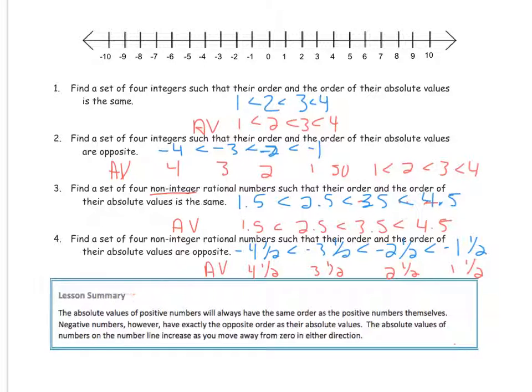All right, lesson summary. We know that the absolute value of positives will always have the same order as the positive numbers themselves. However, negative numbers will have exactly the opposite order. And the absolute values of the numbers on the number line increases as you move away from 0. So the further we move to the left, the absolute values will be greater. So the further we move in either direction, the absolute values or the distance from 0 will be greater.